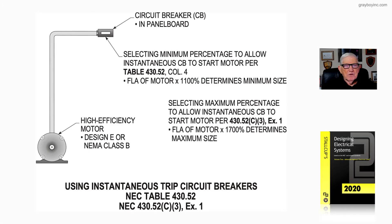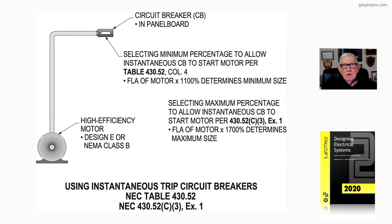This illustration deals with using an instantaneous trip circuit breaker with particular settings. Notice we're selecting a minimum percentage to allow an instantaneous trip setting to be made in accordance with column 4 of Table 430.52. We can start off with 800%, then go to Exception 3 to 430.52(C)(1) and even go up to 1100%, 1300%, and even 1700% where need be.